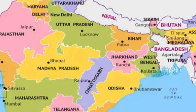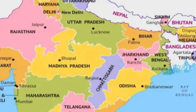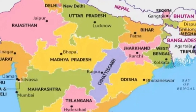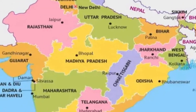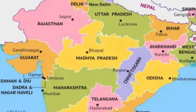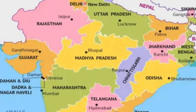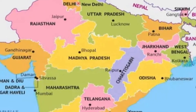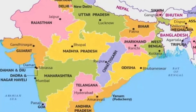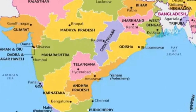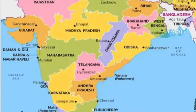West Bengal touches the border with Bangladesh, which was East Pakistan. In 1971 it became Bangladesh. The youngest and newest state of India is Telangana.